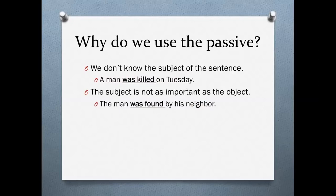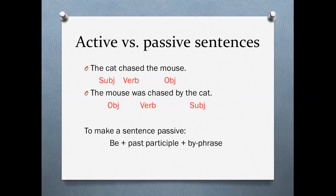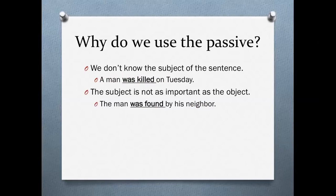Now you may be asking: why? Why do we use the passive? There are two reasons. First, we use the passive when we don't know the subject of the sentence — sometimes we don't know who did the action. When that's the case, we need to use passive. For instance: a man was killed on Tuesday. Who killed the man? I don't know — maybe it was his wife, maybe his brother, maybe a crazy person who came into his apartment. We don't have that information, so we have to use the passive, because the man didn't do anything, but someone did.